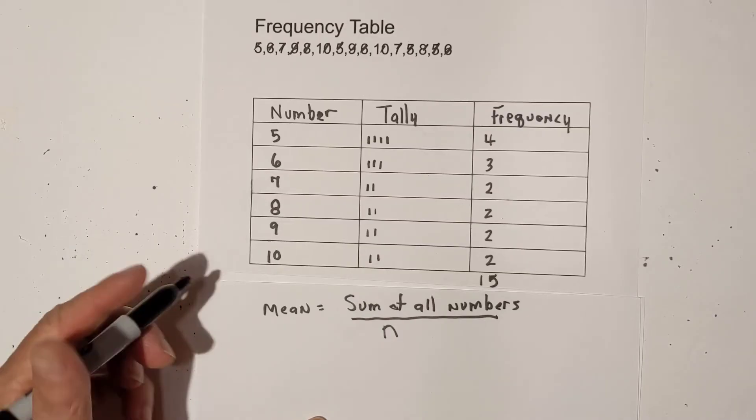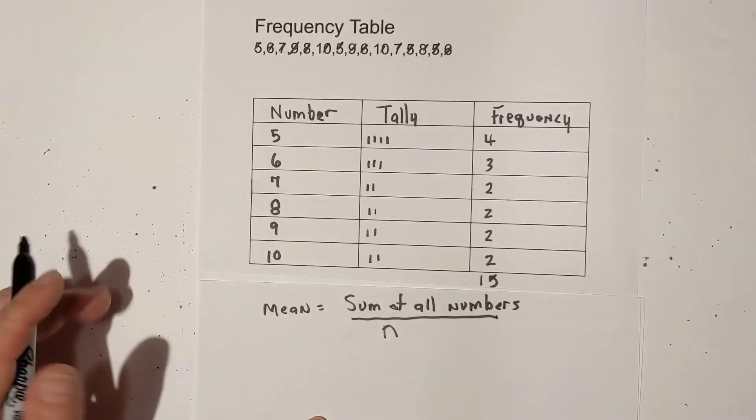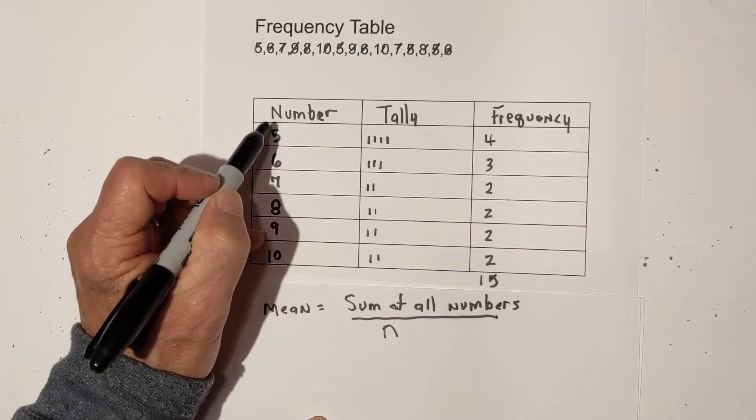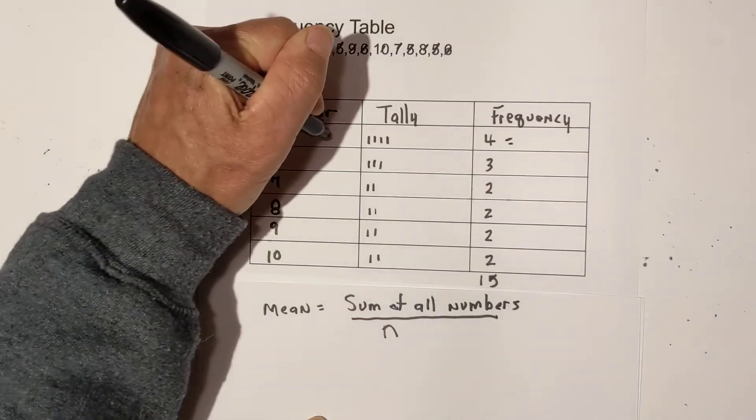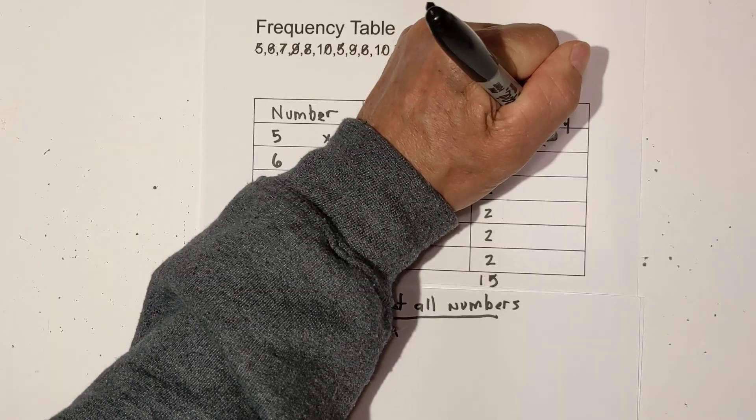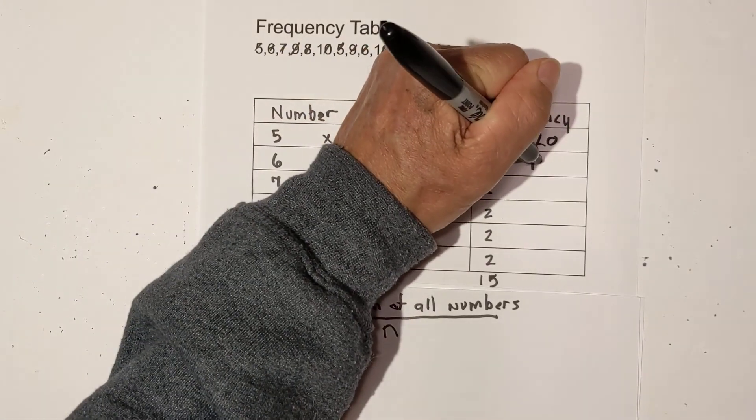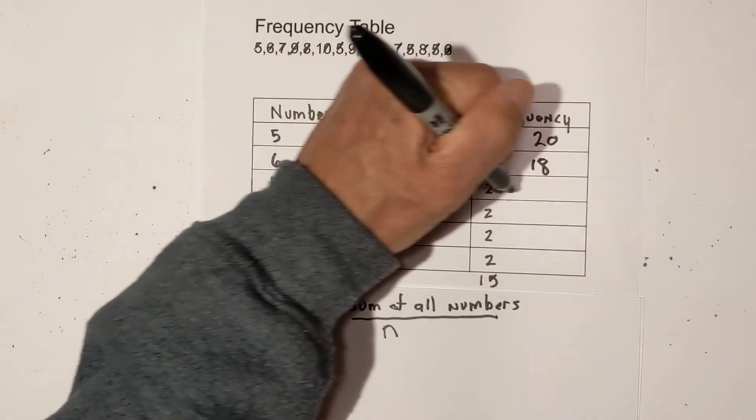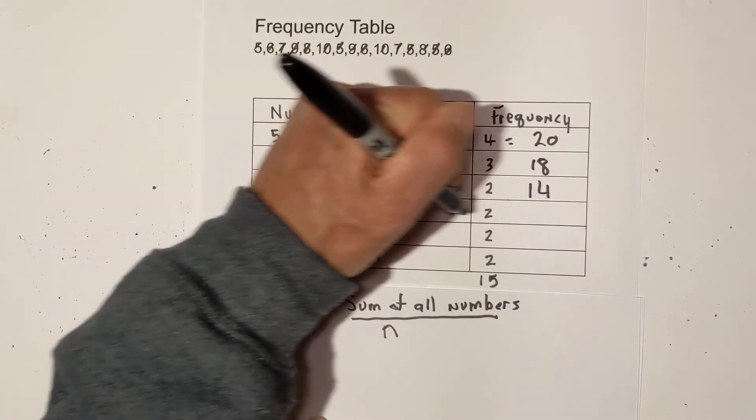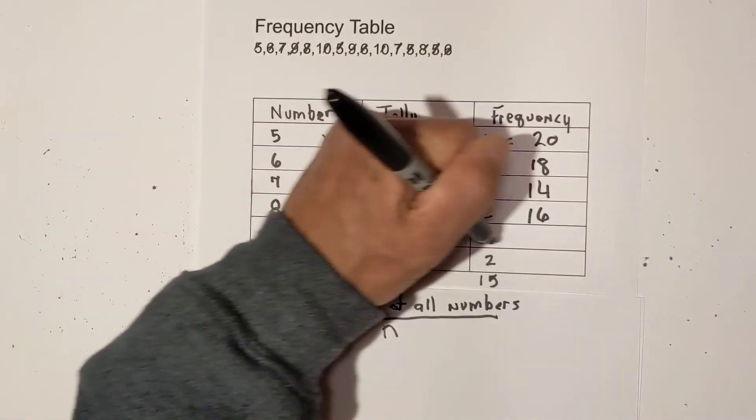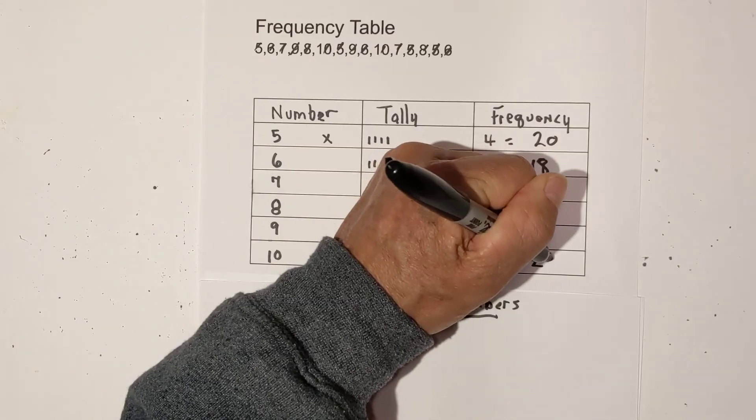Now, in order to find the sum of all numbers, I can just take the number times how many times it appears, so 5 times 4 is 20, 6 times 3 is 18, this is 14, 16, 18, and 20.